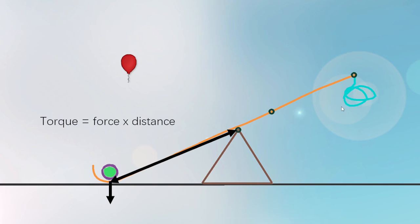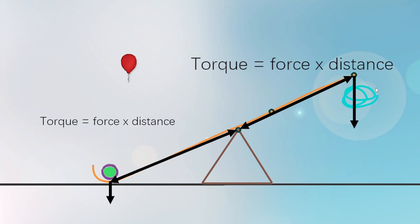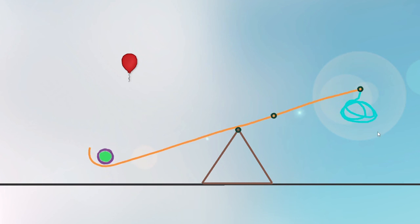This can be fixed by increasing the distance from the fulcrum that the mass is hung. The torque applied by the hanging mass is now large enough to lift the ball to the balloon.